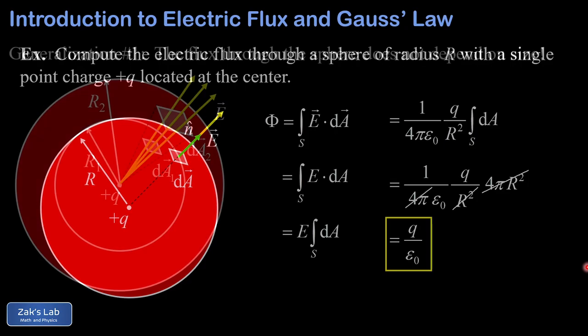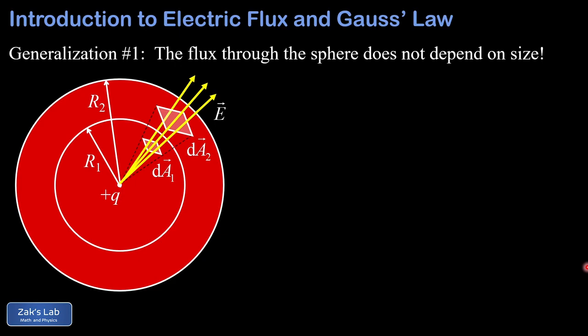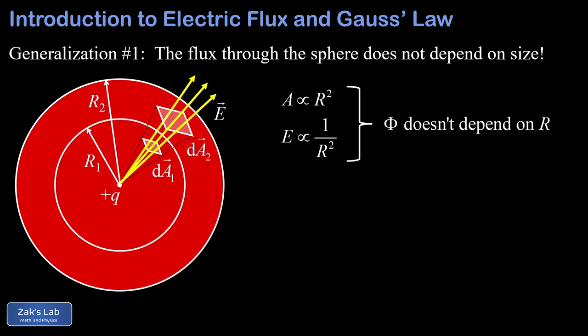This is actually really close to Gauss's law already, but we still need to make three crucial generalizations. First, the flux through the spherical surface does not depend on the size of the sphere — this is already clear from the result q over epsilon zero, which contains no R. To argue it differently, we look at two different spheres with q at their centers and focus on a bundle of field lines passing through a small patch dA1. The field lines spread out at the same rate the area patch grows to dA2 as we project onto the larger sphere, so the same total flux results. The area of a sphere is proportional to R squared, but the electric field of a point charge is inversely proportional to R squared, so those R's cancel out and the flux doesn't depend on R.